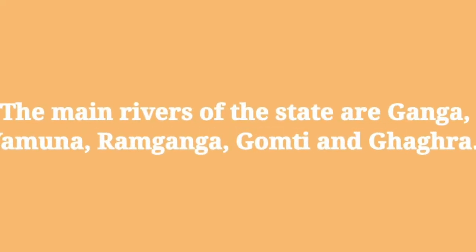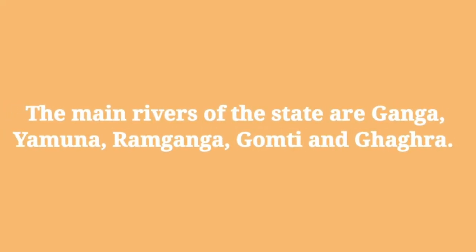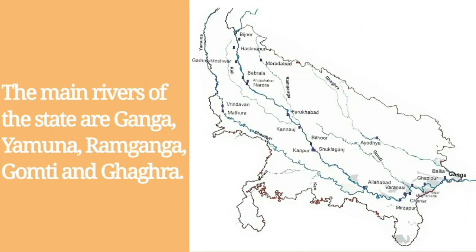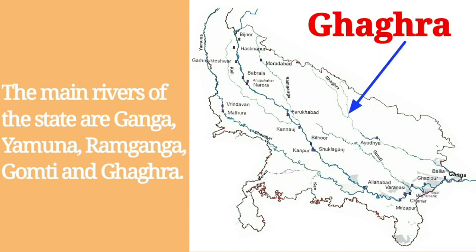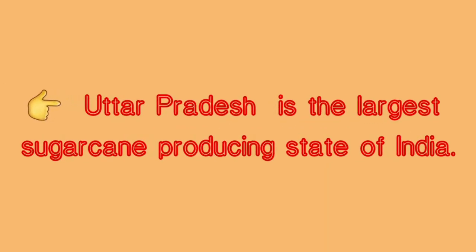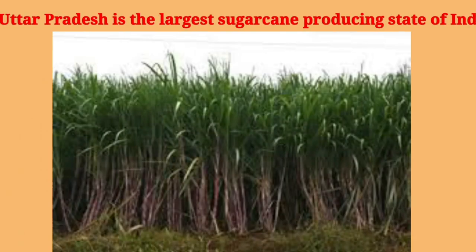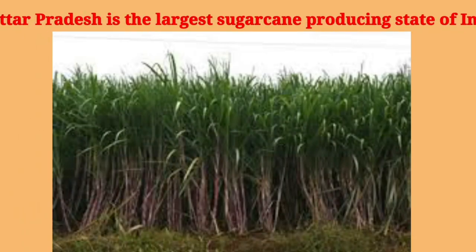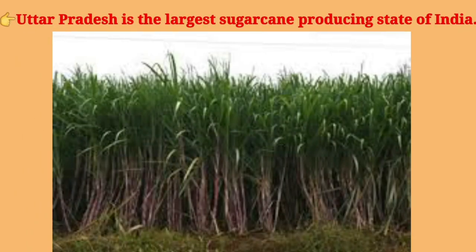The main rivers of the state are Ganga, Yamuna, Ram Ganga, Gomti, and Ghagra. Uttar Pradesh is the largest sugarcane producing state of India.